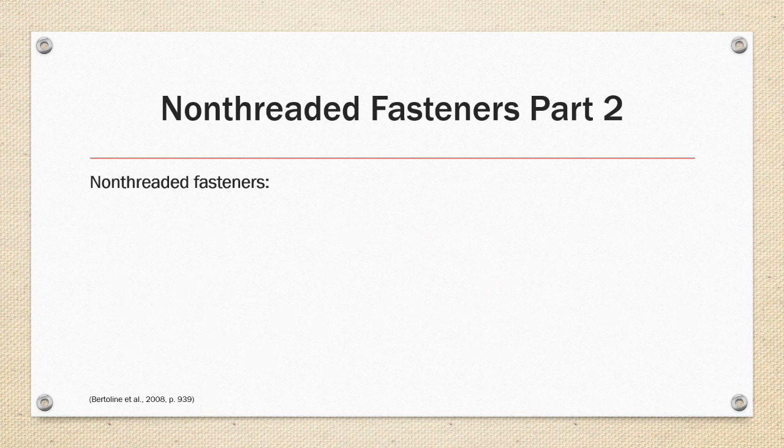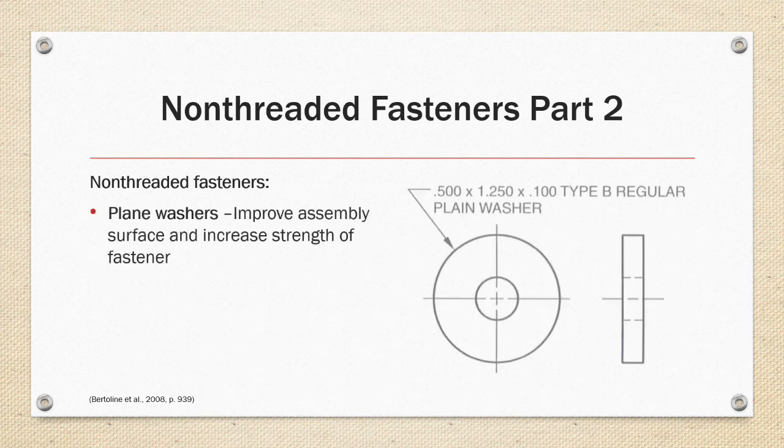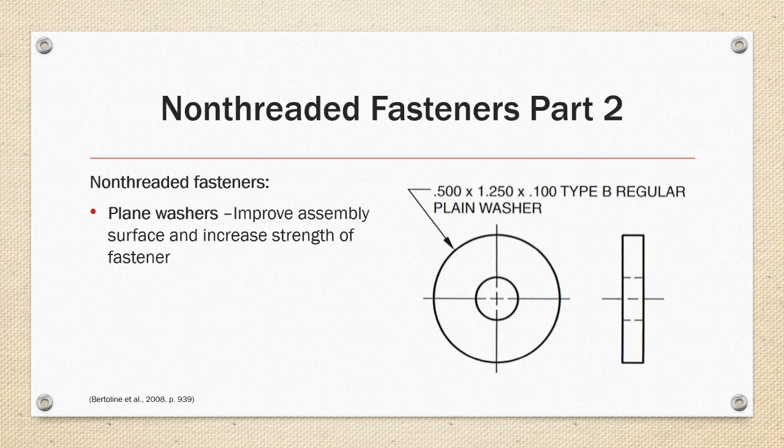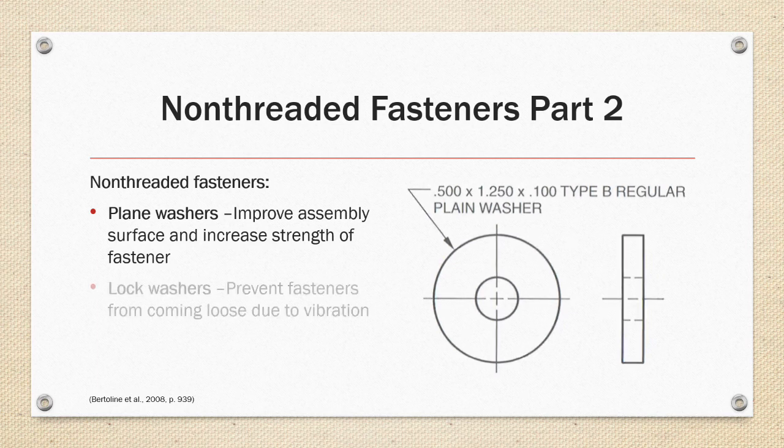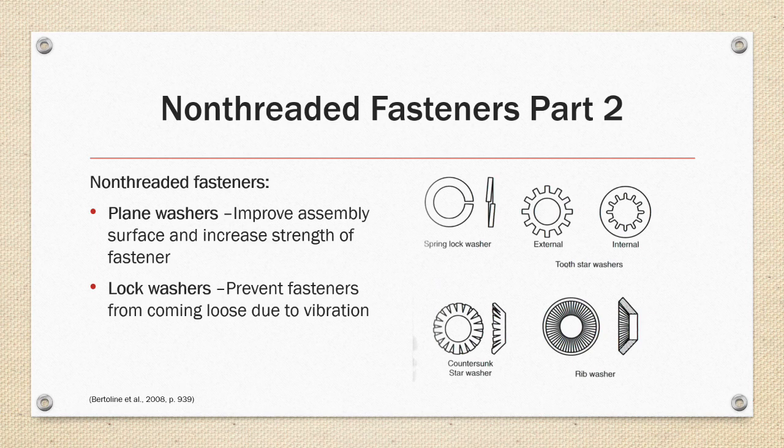Non-threaded fasteners part 2 is the plain washer. It's used to improve the assembly surface and increase strength of the fastener that it's mated to. And lock washers that prevent fasteners from coming loose during vibration.